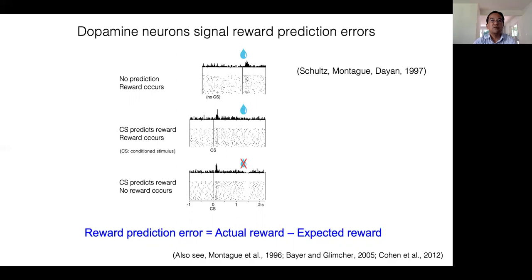When the animal receives a reward surprisingly, dopamine neurons exhibit a transient excitation. After the monkey knows that a certain stimulus predicts a reward, then their response to reward is greatly diminished and the response shifts to the cue that predicts reward. And when the predicted reward is omitted, then dopamine neurons decrease their activity below baseline. From these observations, it was proposed that dopamine neurons signal reward prediction error or the difference between actual and expected reward.